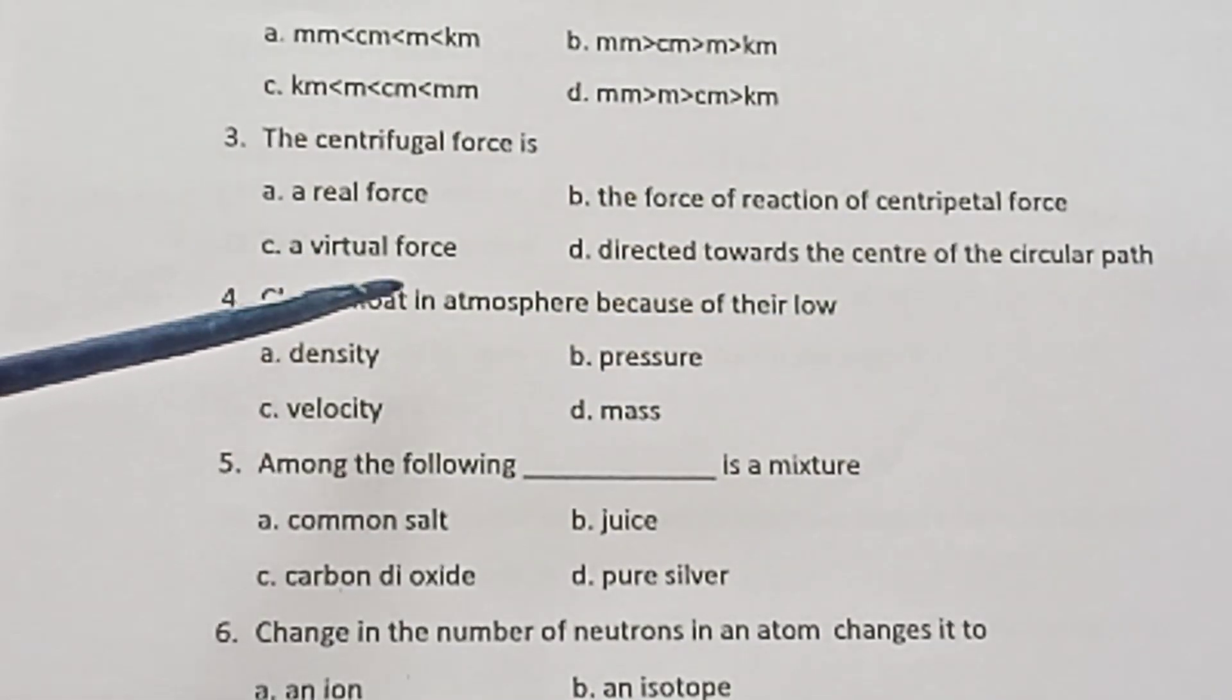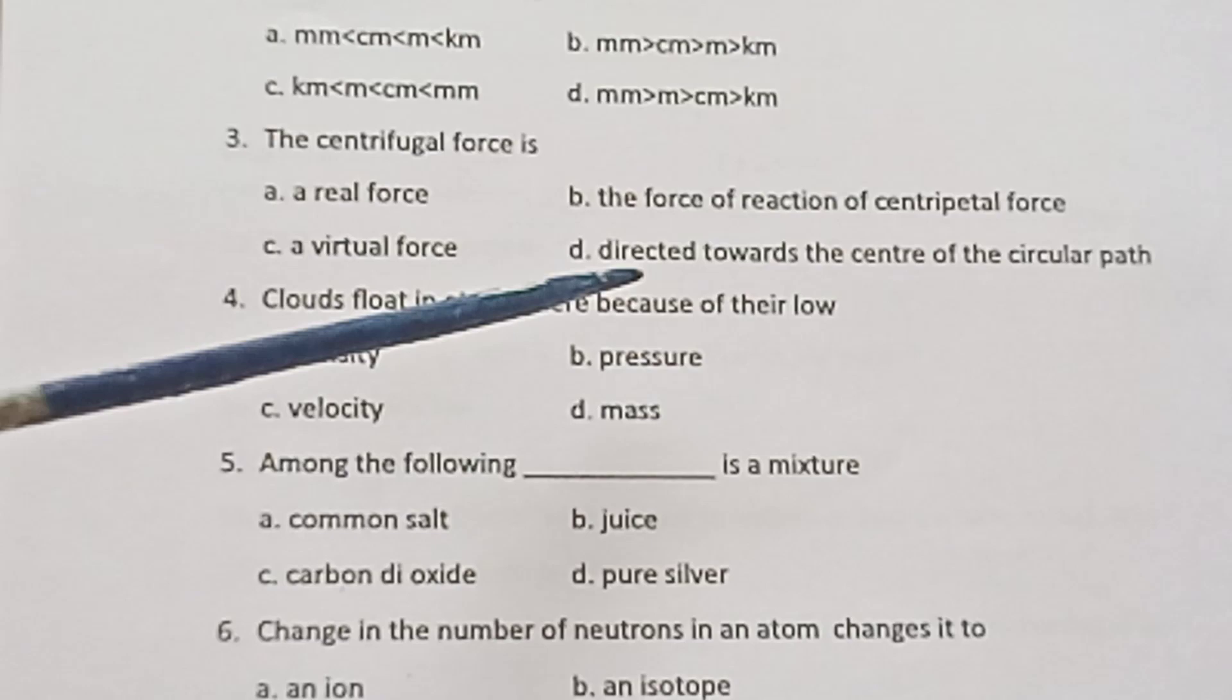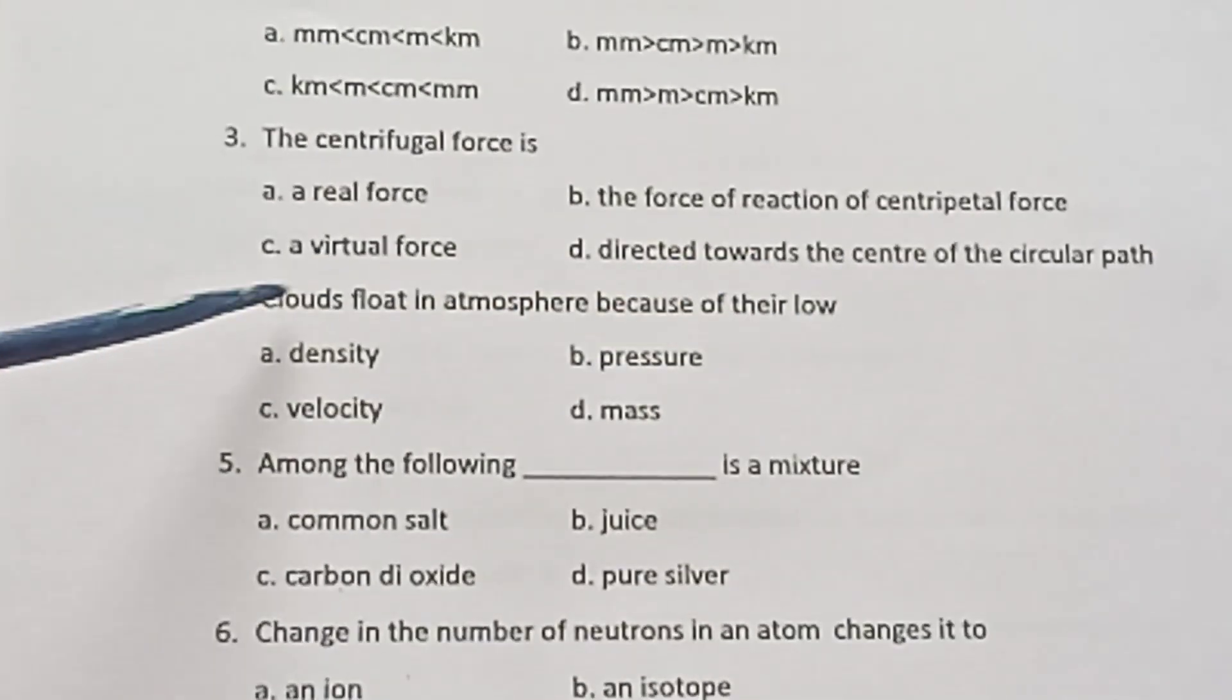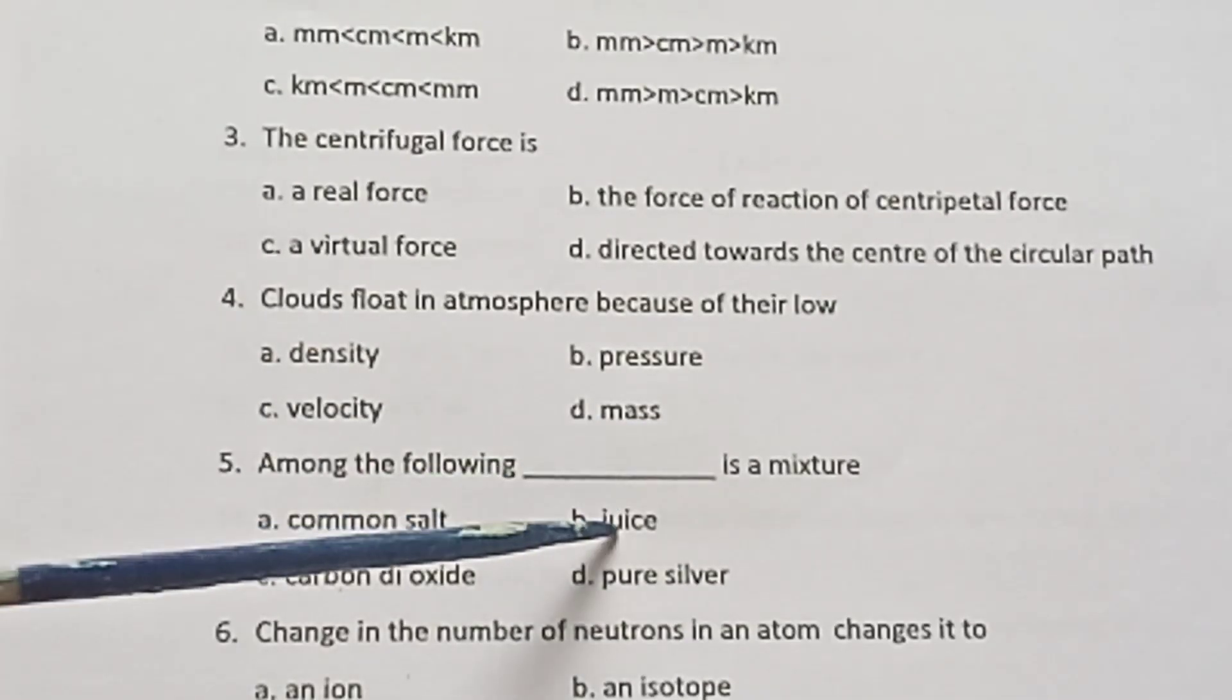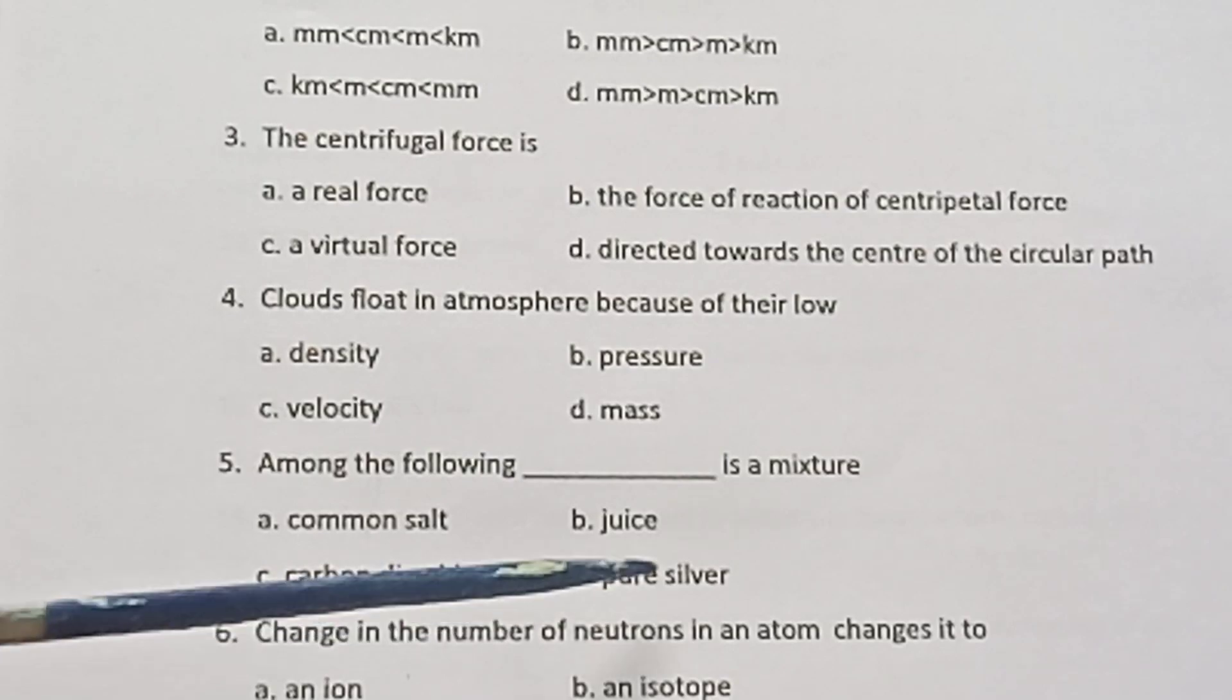Question 4: Clouds float in atmosphere because of their low: density, pressure, velocity, or mass. Question 5: Among the following, which is a mixture? Common salt, juice, carbon dioxide, or pure silver.